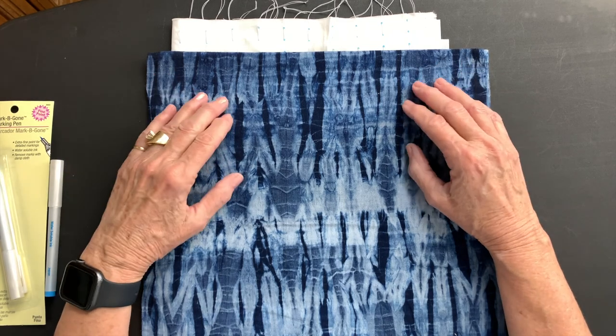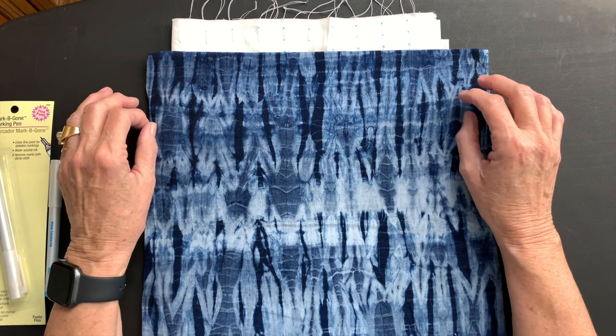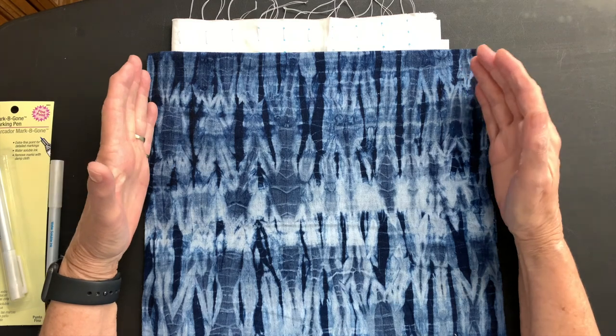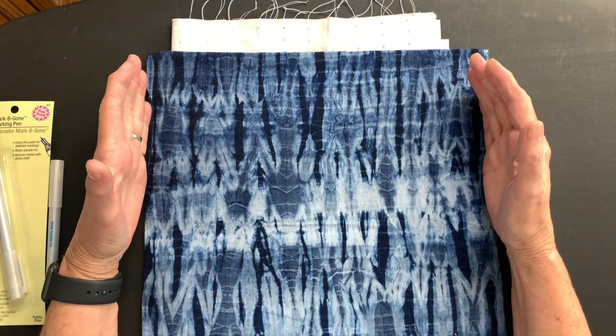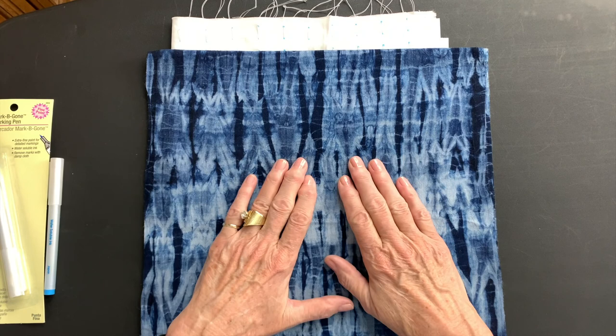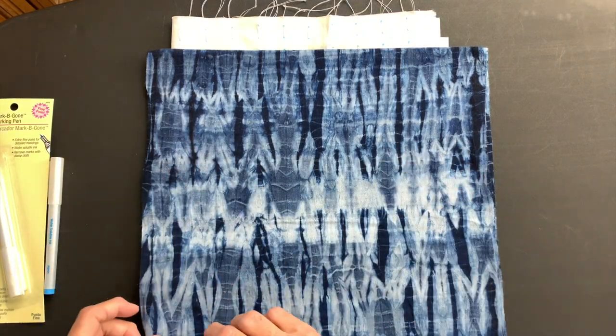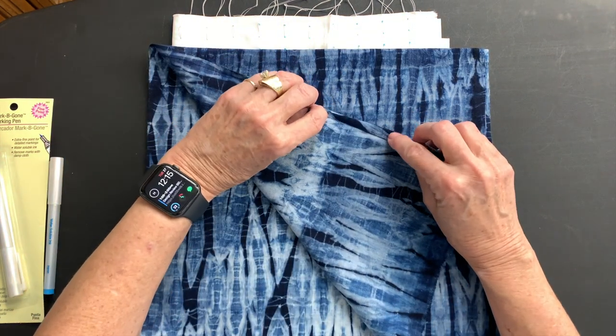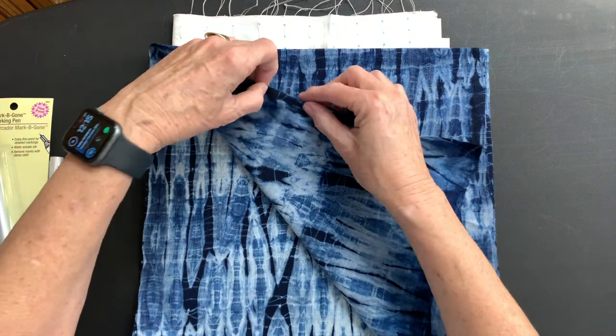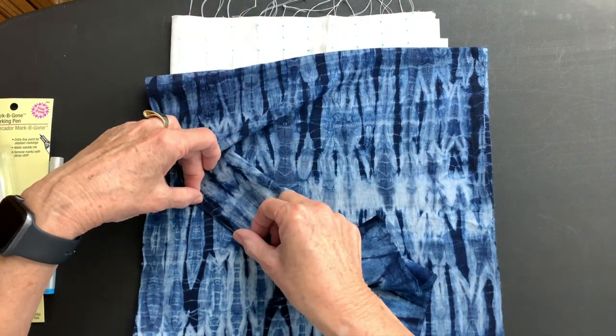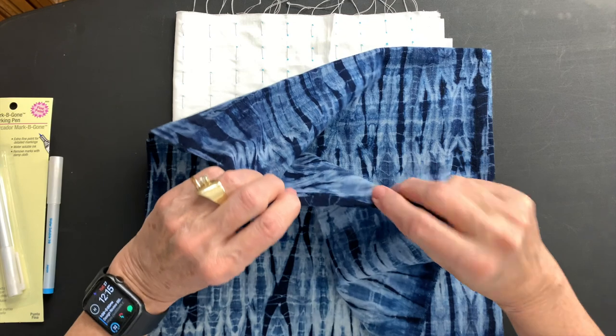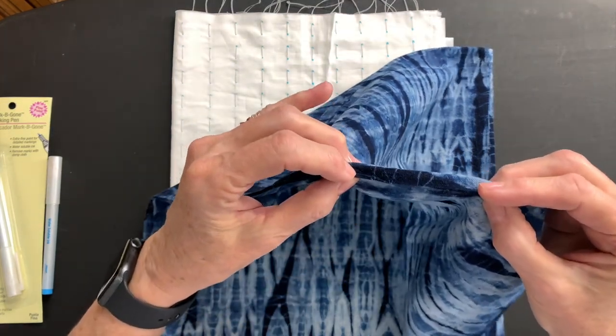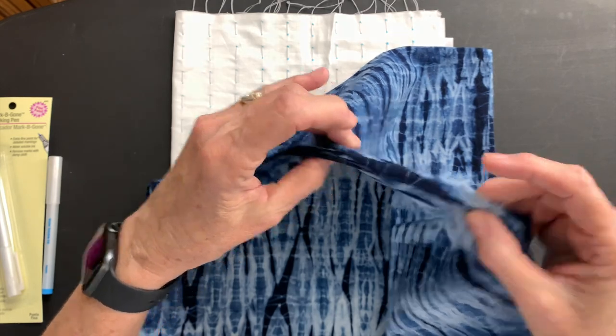But one way that you can do some designs that are really unique and fun to play with, you start out by pleating your fabric up. And there's different ways to pleat the fabric. This is one way. And this fabric was actually started out as little tiny pleats. And you can see this was the size of the tiny little pleat that I had this fabric all pleated up to be that size before I did any stitching or wrapping.